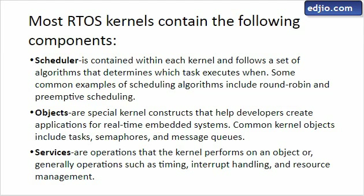There are several constructs available that can be allocated as objects from an application of a real-time embedded system. These objects include task creation, semaphore, mutex, message queue, pipes, and so on. There are also several services available in RTOS that you can call from your application, such as timer handler, interrupt handler, resource management, and memory management.